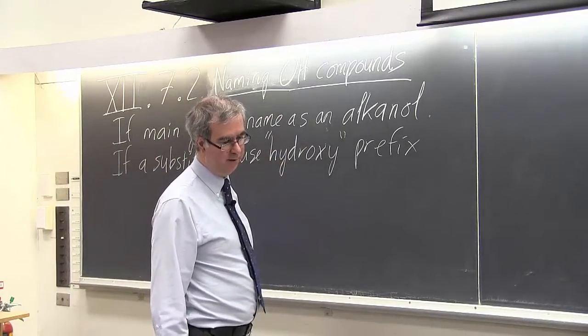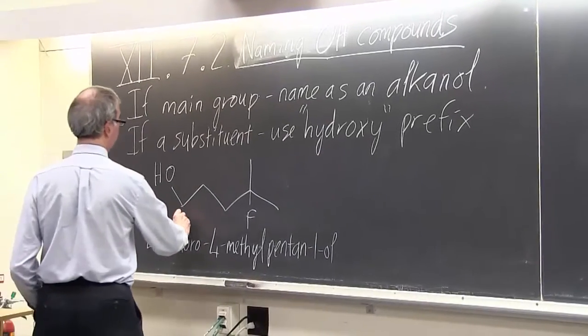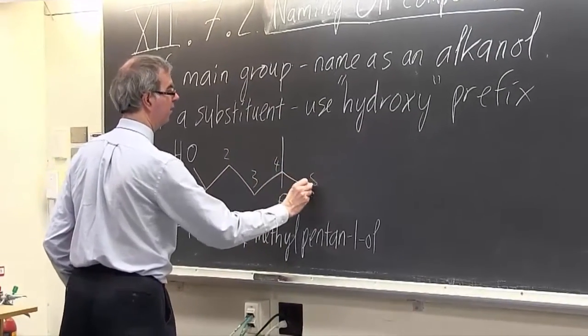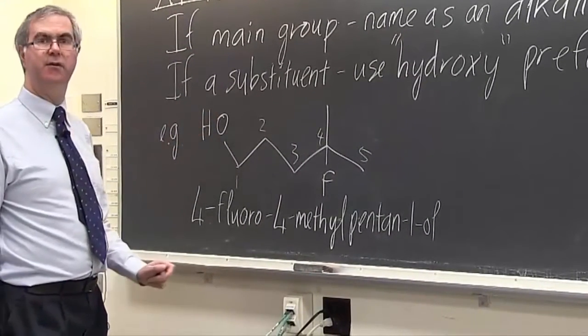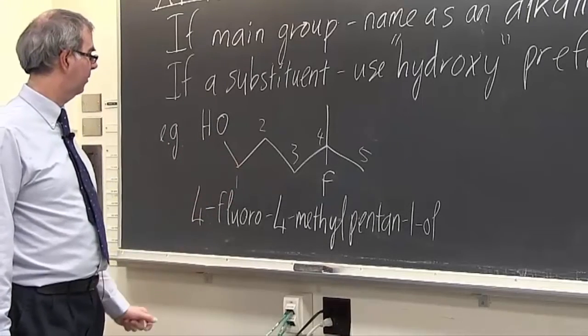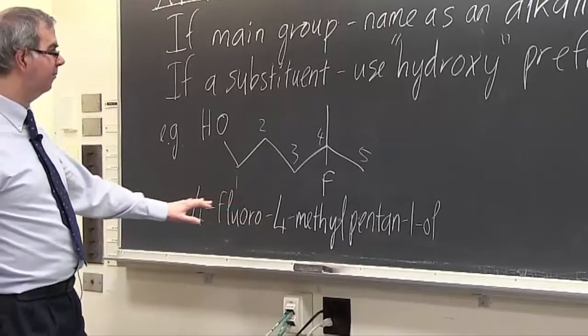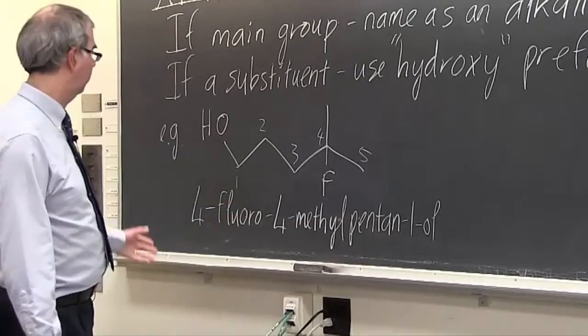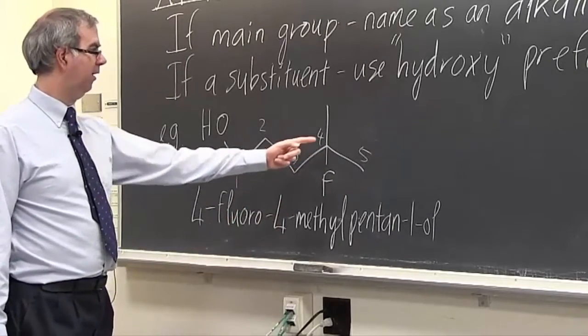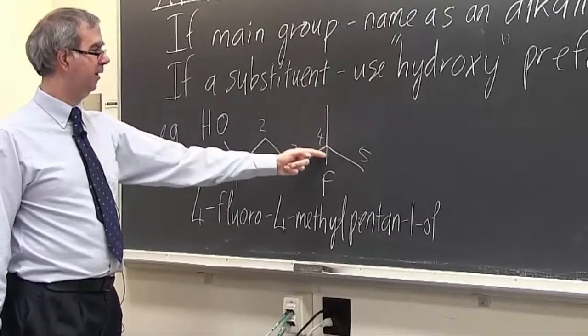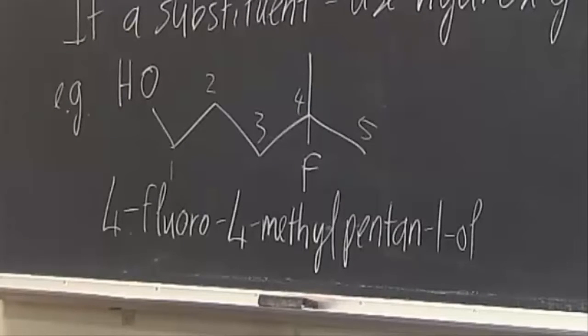So a couple of examples. We have a five-carbon chain, and the OH is our top priority group here. So this becomes a pentan-1-ol, and the other substituents are laid out alphabetically coming before that. They're both at the four position in this structure. We have a methyl group and a fluorine. So it's 4-fluoro-4-methyl-pentan-1-ol.